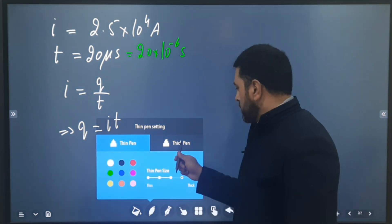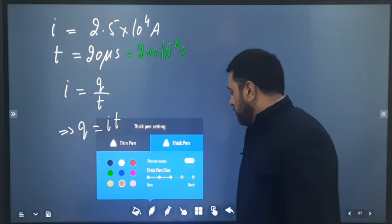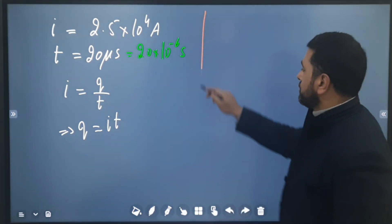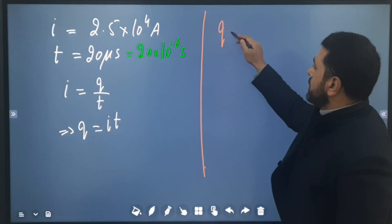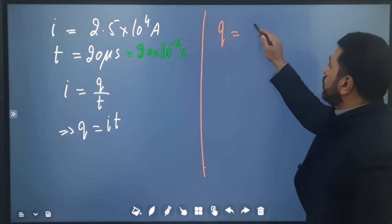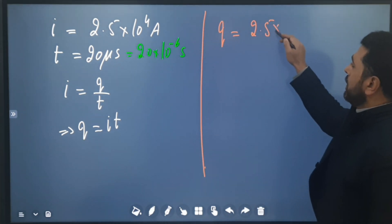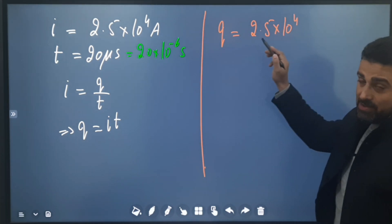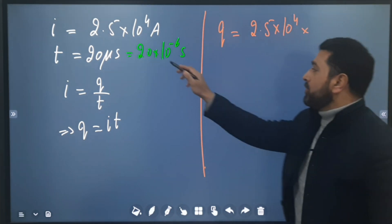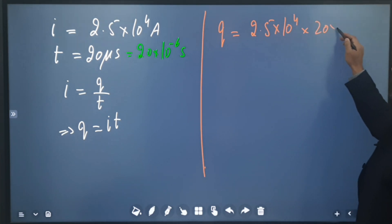We just substitute the values. Q equals I is 2.5×10^4 amps in SI system, and then time T is 20×10^-6 seconds.